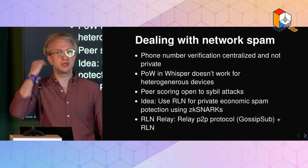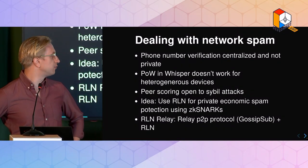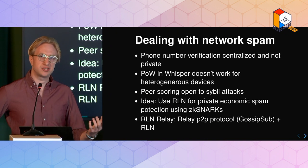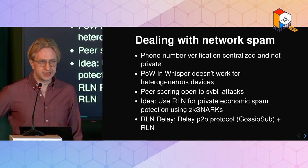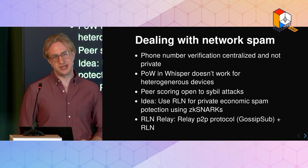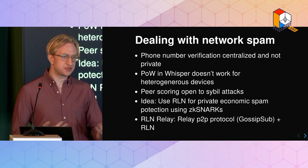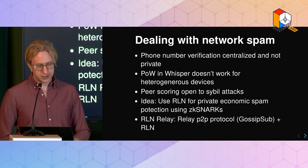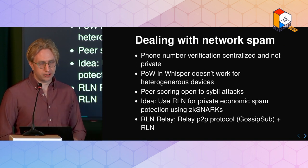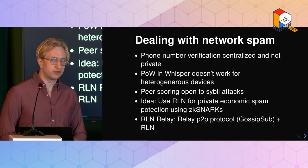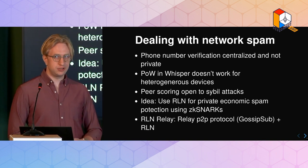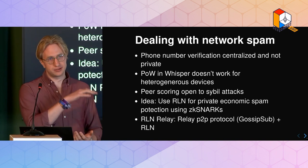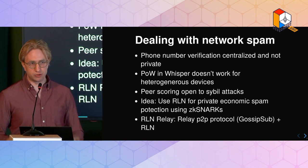Dealing with network spam: traditionally if you look at spam and how people deal with it, like with Google, Facebook and Twitter accounts, you usually have phone number verification. The idea is that it's expensive to get a phone number - it's a Sybil resistance mechanism - but it's centralized and not private. Whisper originally had a proof-of-work algorithm, but it doesn't work for heterogeneous devices because you can never generate enough proof of work on a mobile phone without draining the battery, and the requirement has to be set low enough that someone can spin up an AWS node and overwhelm the network.